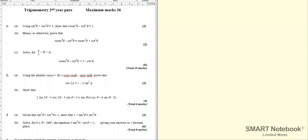Okay, so let's have a look at number two. It says using the identity cos(A + B) = cosA cosB - sinA sinB, prove that cos2A can be written like the right hand side.